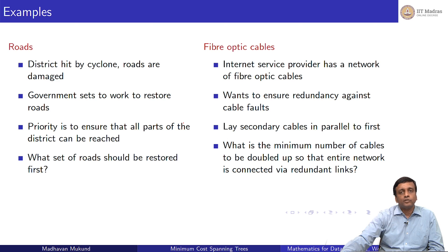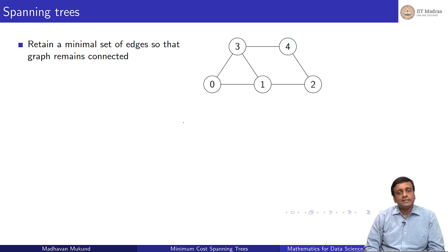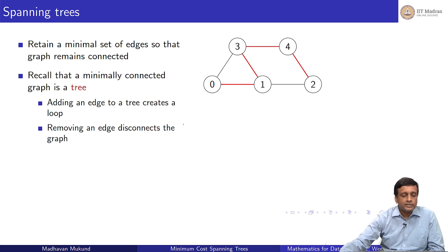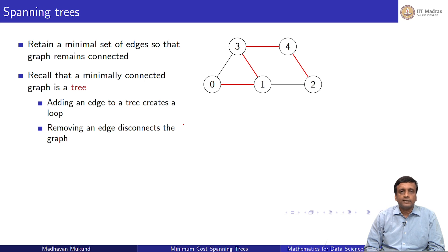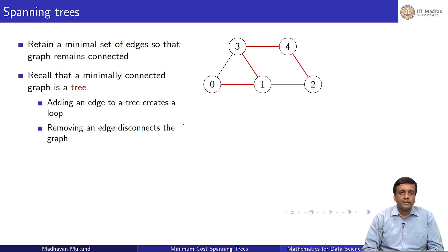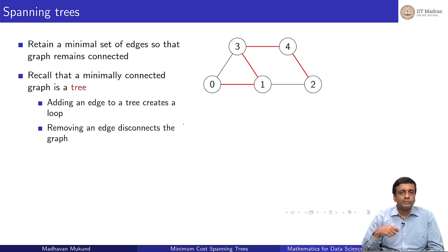Both of these problems feed into the problem of finding a spanning tree. A spanning tree asks how we take a connected graph and retain a minimum set of edges so that it remains connected. A minimum set of edges that is connected is a tree — a connected acyclic graph. If you add an edge to a tree, you add a redundancy and get a loop. If you remove an edge from a tree, it is no longer connected. That is why it is a minimal acyclic connected graph.